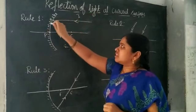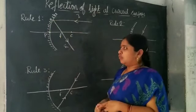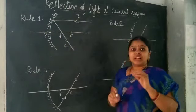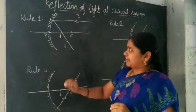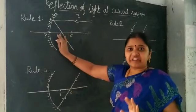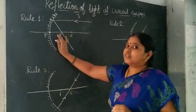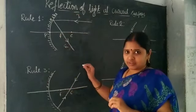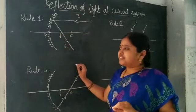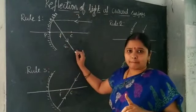The ray which is parallel to the principal axis, after reflection, passes through the focal point. Pause the video here and draw the ray diagram. Practice this ray diagram. This is the first rule.